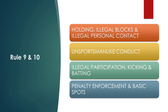Rule 9 and 10 cover holding, illegal blocks, illegal personal contact, unsportsmanlike conduct — a big chunk of that — and rounds out with illegal participation, kicking, and batting. Pretty big fouls, 15-yard and 10-yard variety, that can set teams back and set you towards disqualification. Penalty enforcement and basic spots is Rule 10, which seems simple enough but is pretty difficult to understand.